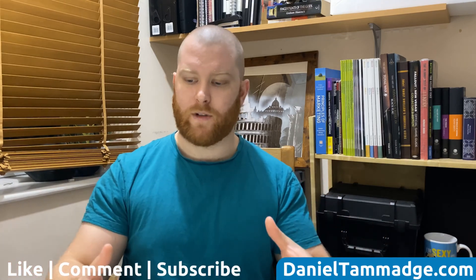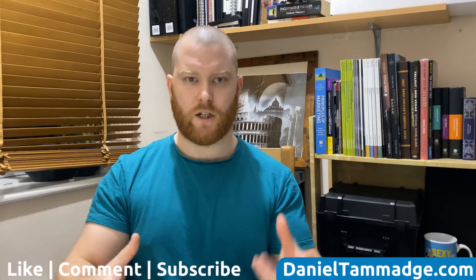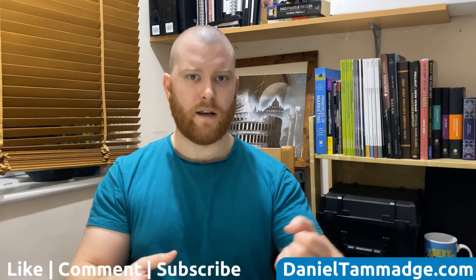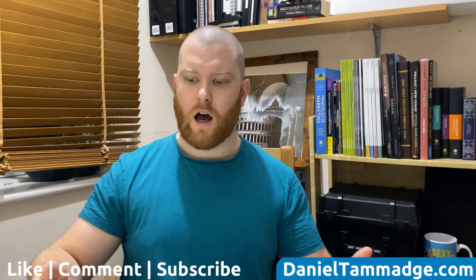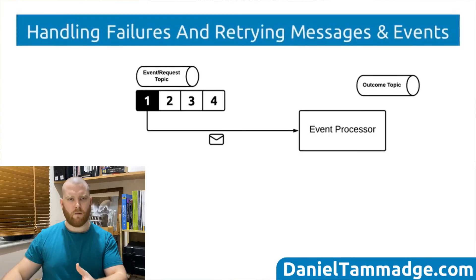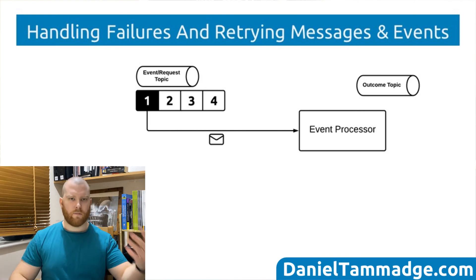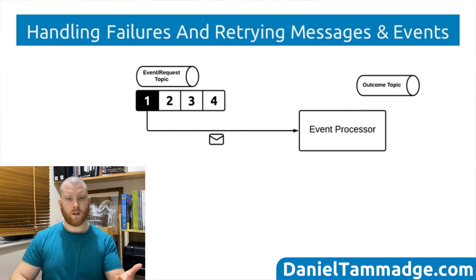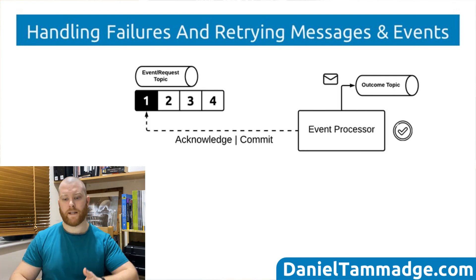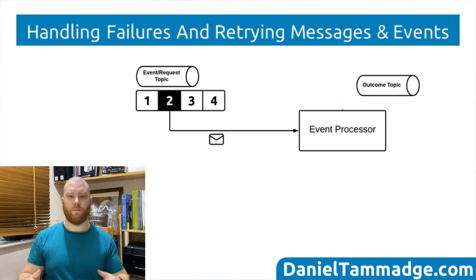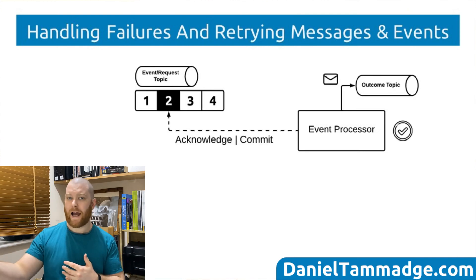In an event-driven system, you would have an event processor which would be consuming and subscribing from a queue or topic, and it would be processing messages as they come in. In this example, the event processor would process message one — if it was successful, it would publish the outcome and acknowledge or commit the message. And it would also do it for message two: consume, process, and publish the outcome.